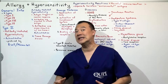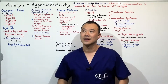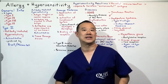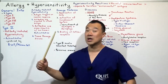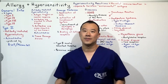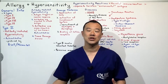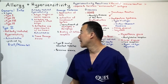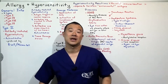Isn't IgE in type 1 hypersensitivity an antibody? Yes, but this antibody is an auto-antibody — not the Autobots in Transformers — but auto-antibodies. Auto-antibodies mean that these antibodies attack human tissue, your own tissue, your self-tissue. This is a bad thing, and these are produced by B cells and plasma cells.